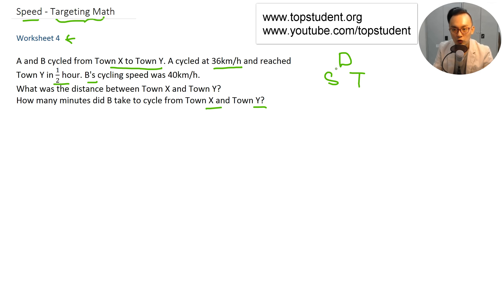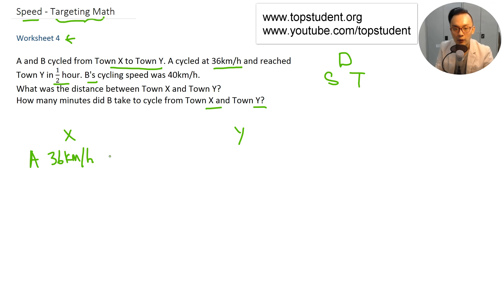Every time you see a distance or speed question, always draw the triangle — or just write down distance, speed, time — and that will help you decide. Draw X and Y. A cycled at 36 kilometers per hour.